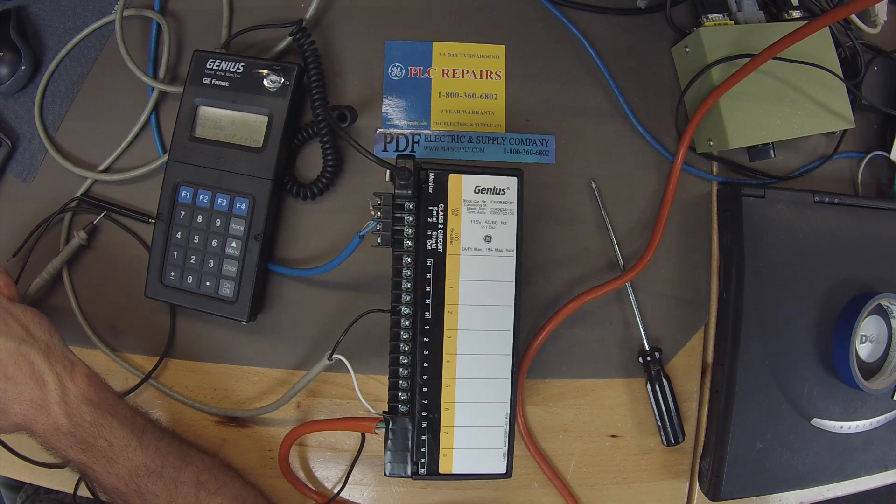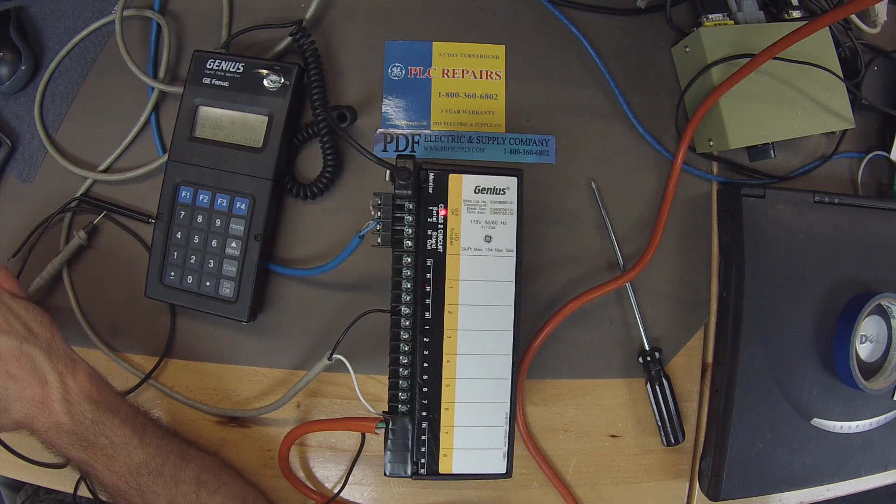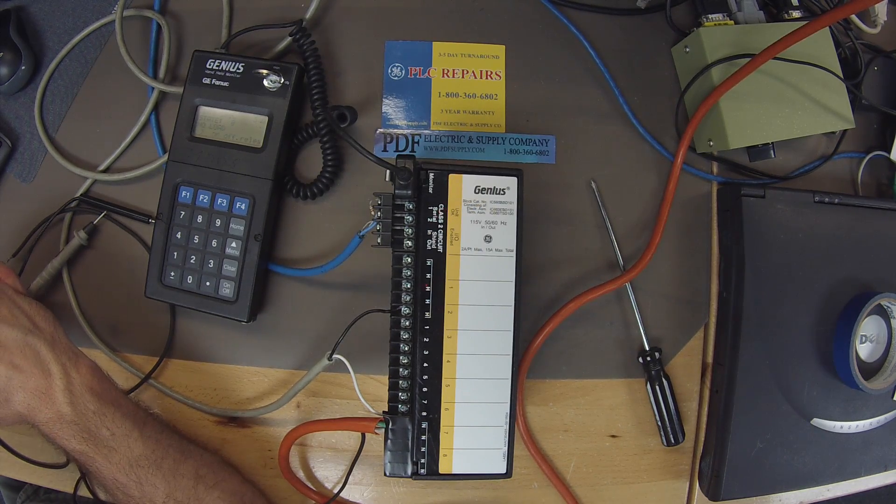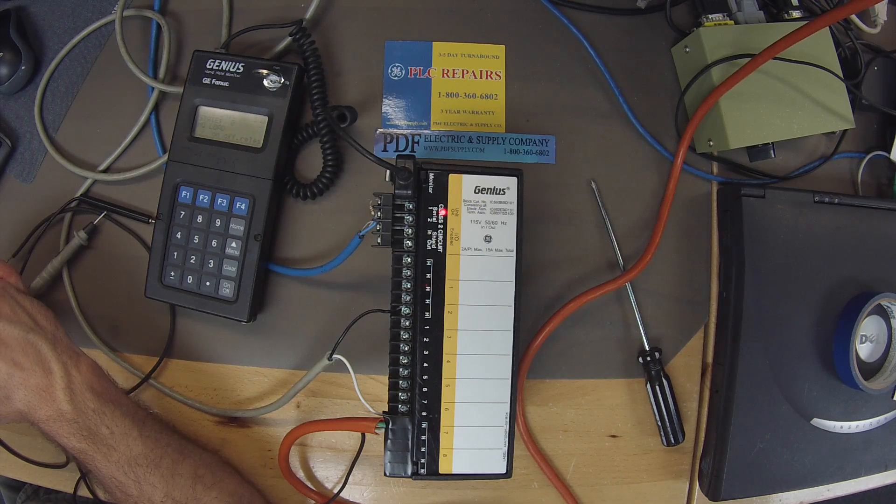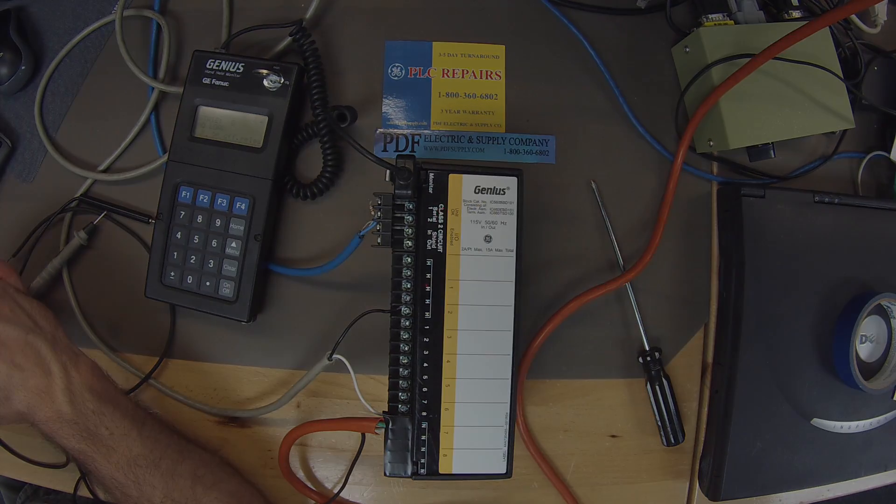IC660BBD101 is a block that we very commonly repair here at PDF Supply. We offer exchange programs, new and re-manufactured products, and same-day shipping. So if that's something that you need or interests you, please see us at PDFsupply.com. Thank you.